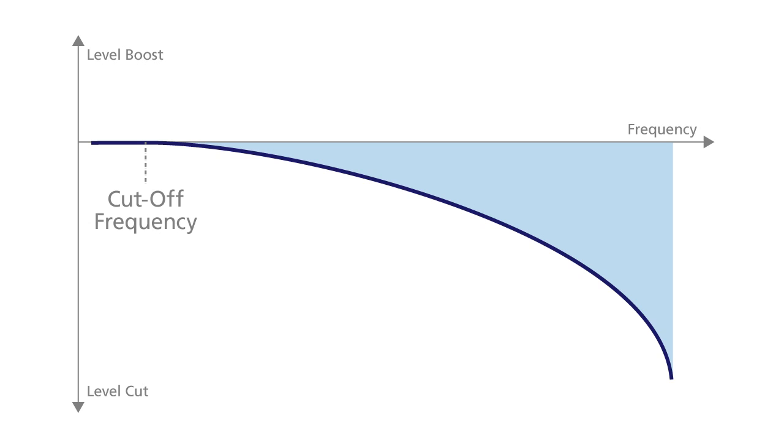The last option that is available for most filters is the filter slope selector. This determines how aggressively the filter cuts the sound above or below the cutoff frequency. A filter slope will often be expressed in terms of the decibel cut per octave. A 12 decibels per octave filter will cut the sound by 12 decibels for each octave by which an element of the sound exceeds the cutoff frequency. So frequencies which are one octave above the cutoff frequency will be cut by 12 decibels. Frequencies that are two octaves above the cutoff frequency will be cut by 24 decibels and so on.